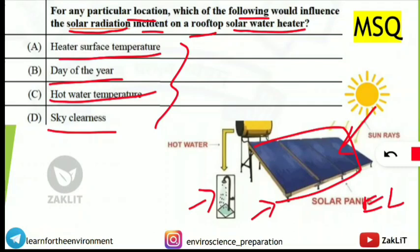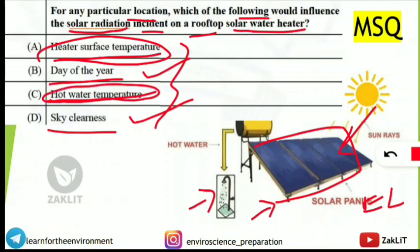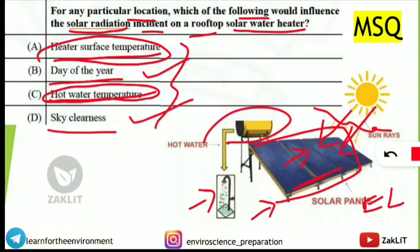The correct options are B — day of the year — and sky clearness. Heater surface temperature and hot water temperature will not influence the solar radiation incident on the rooftop solar water heater. If the sky is clear, more solar rays fall on the panel. The day of the year — whether summer or winter — also determines the amount of sun rays. These two things influence incident solar radiation, while heater and hot water temperature do not.